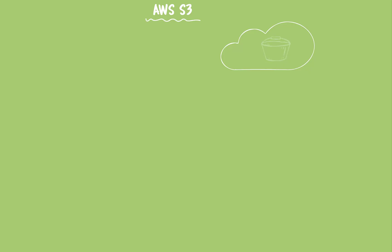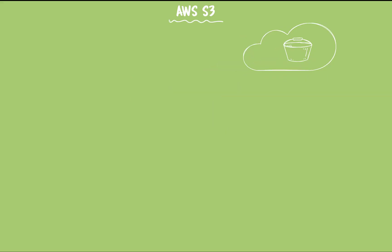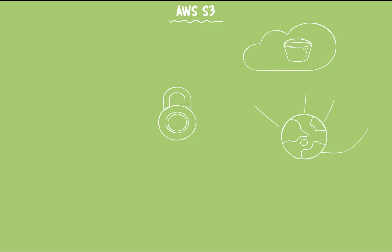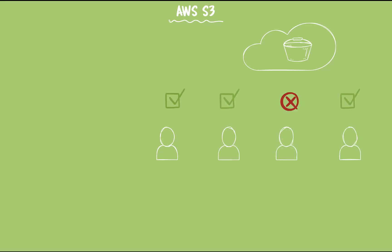Now let's look at S3 buckets. AWS S3 buckets are like storage containers in the cloud where you can store all kinds of files — documents, images, videos, or even backups. Think of it as an online hard drive that's super secure, scalable, and accessible from anywhere. Each bucket has a unique name and can be set up with different permissions so you can control who can access your files. It's a simple yet powerful way to manage and store your data on AWS.